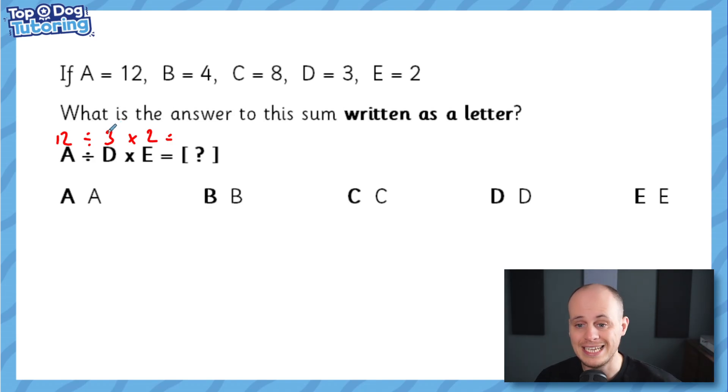12 divided by 3 is 4. We hold 4 on our head, then we do the next bit. What's 4 times 2? 4 times 2 is 8. We write it down and then we simply have to match up our answer to one of the codes above. Now what's nice about this is if you get a number, let's say we got 9, and then we look up here and 9 doesn't exist, then we know we've done something wrong because it has to be one of these five answers. But luckily, 8 is the same as C, so we know that C is our answer. And it really is as simple as that.